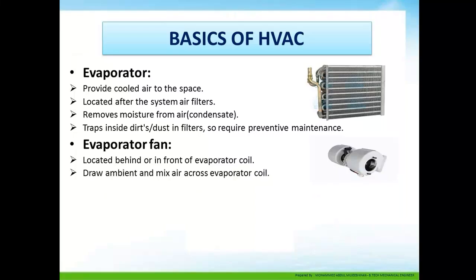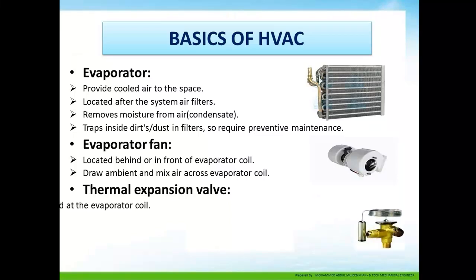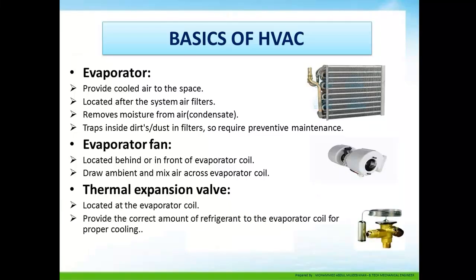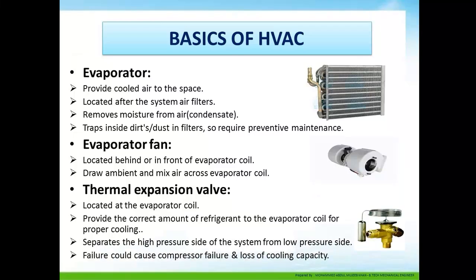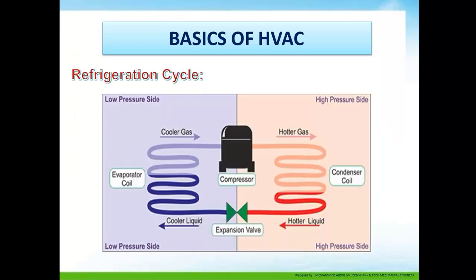The evaporator coil draws ambient and mixed air across it. The thermal expansion valve, located at the evaporator coil, provides the correct amount of refrigerant to the evaporator coil for proper cooling. It separates the high-pressure side from the low-pressure side of the system. Failure of the TXV could cause compressor failure and loss of cooling capacity.